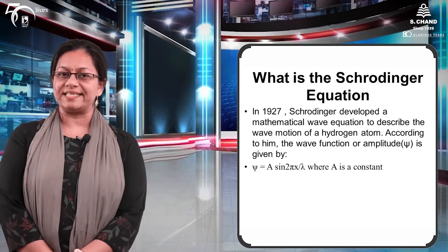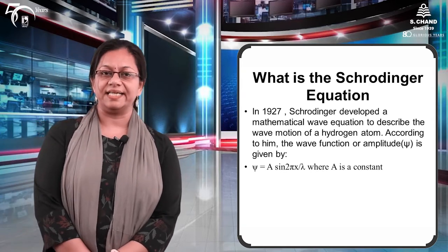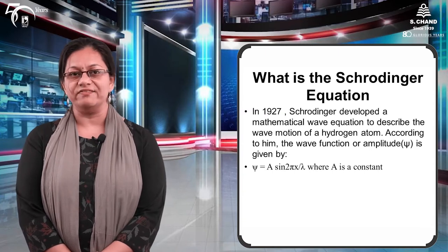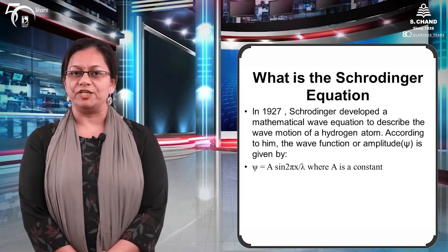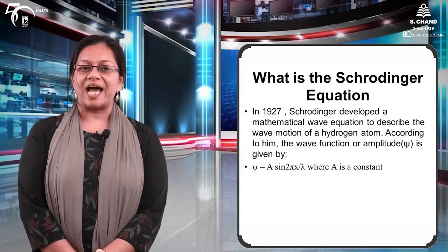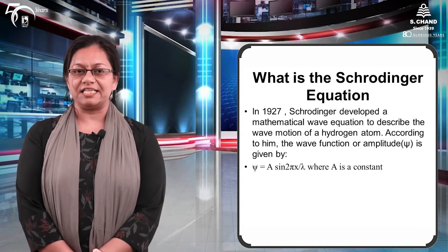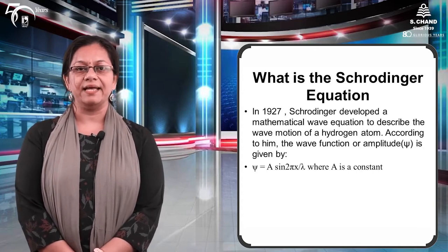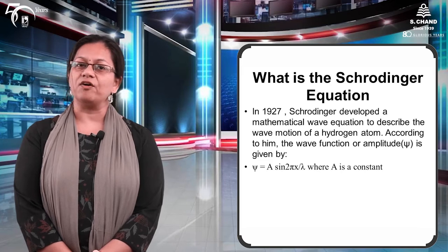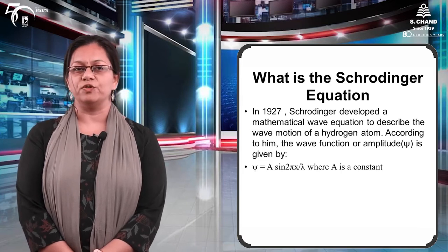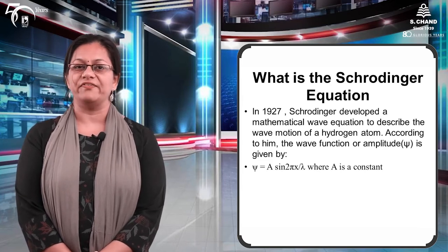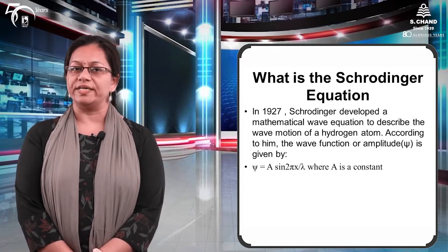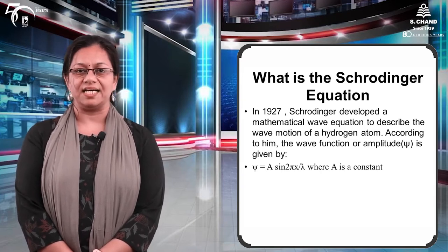Amplitude ko chi se represent karte hain, which is also called the wave function. Chi is given by the expression A sine(2πx/λ), where A is a constant, chi is the amplitude of the wave function, and lambda is the wavelength.